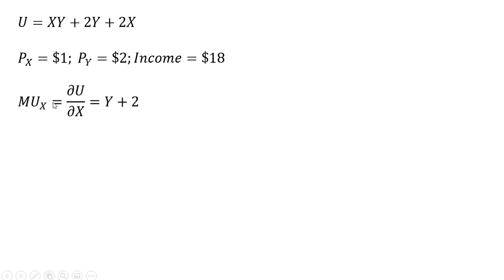First thing we're going to do to maximize utility is get the marginal utility of good X. Taking the partial derivative of the utility function with respect to good X, we get back Y plus 2. The marginal utility of good Y is X plus 2.